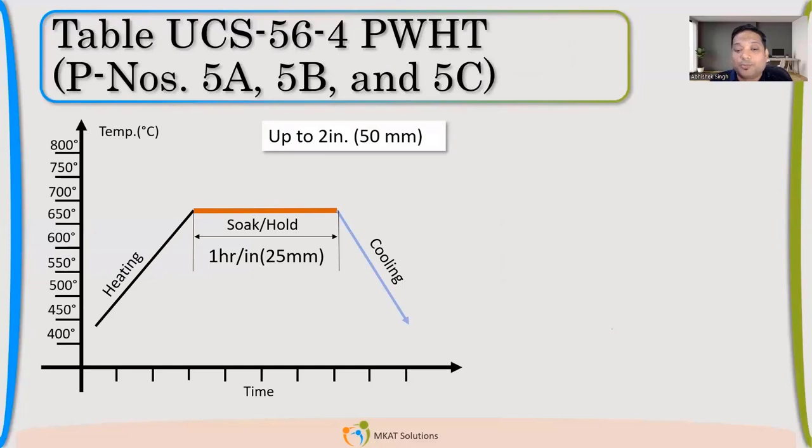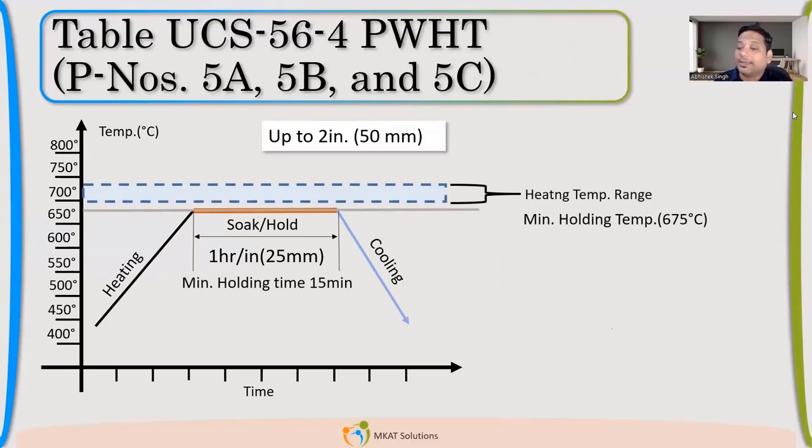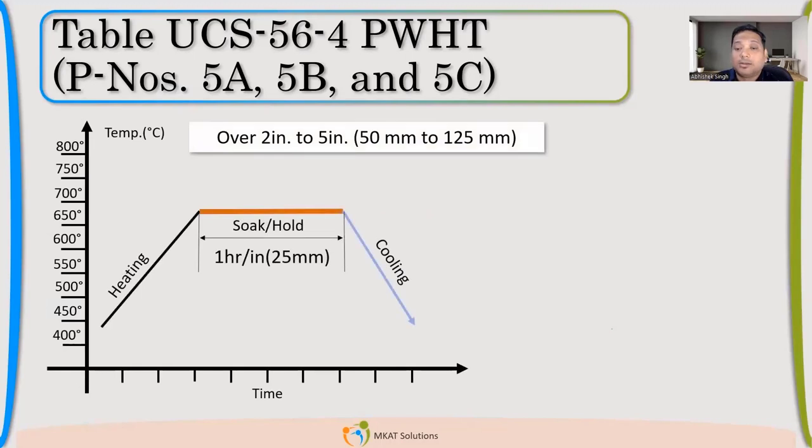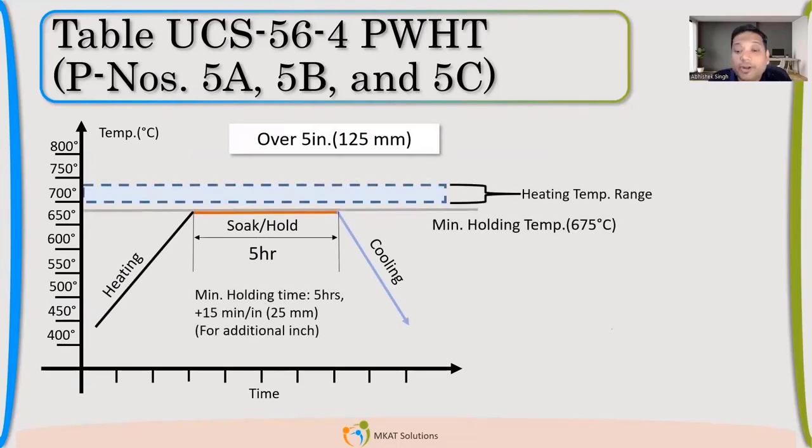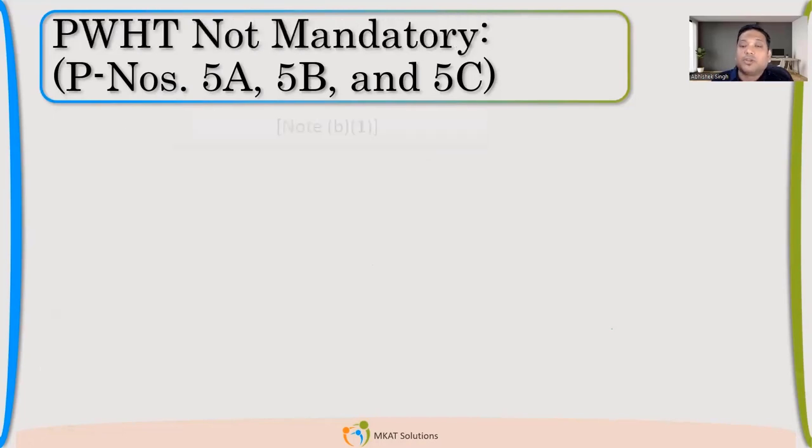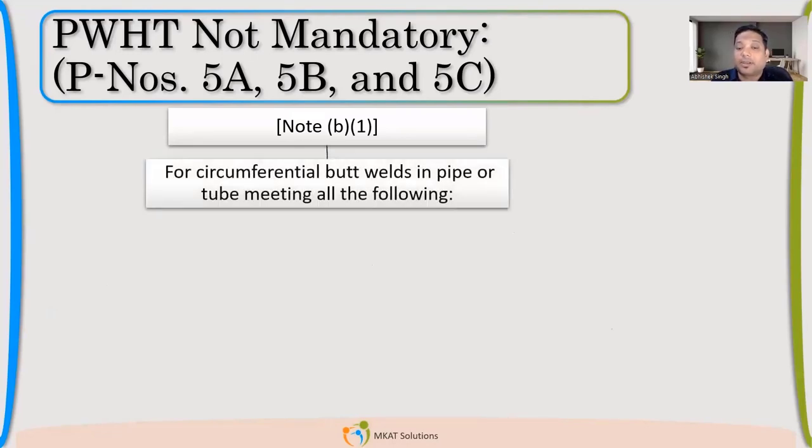Now 5A, 5B, 5C, there are 2.5% chrome-moly steels. So here if you see that holding temperature is a little higher, it's 675. So holding temperature keeps on increasing once the chromium percentage increases. The holding time is same, 1 hour per inch. That is not changing. So I have to maintain a temperature which is higher. Now same thing for more than 50mm thickness, over 5 inches, over 125mm, there is slight change. So 5 hours for 125 and any additional increment, 15 minutes per inch. So you don't have to remember these things. Just know, if you want to remember, just remember the temperature for 2.5% chrome-moly. What is the temperature? 675. For P-number 1 it's 595. So that you can remember.